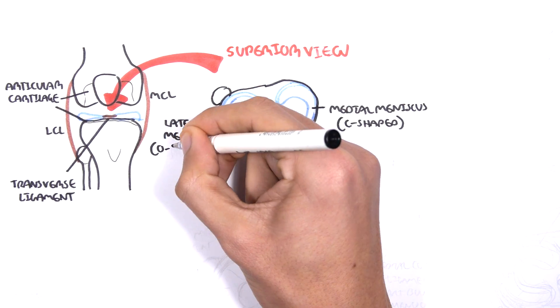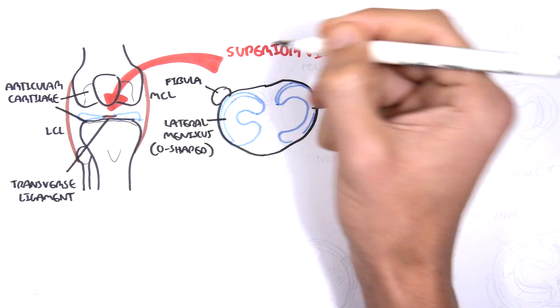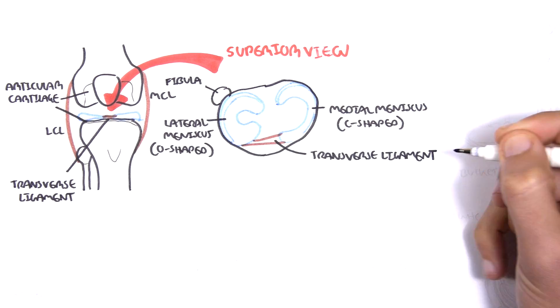Here is the fibula bone at the posterior lateral part of the tibia. And again, here is your transverse ligament connecting the anterior horns or anterior parts of the meniscus.